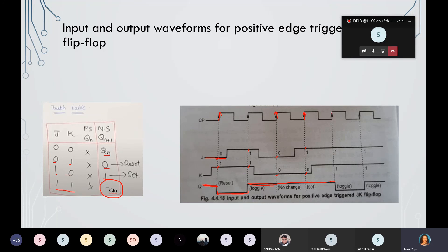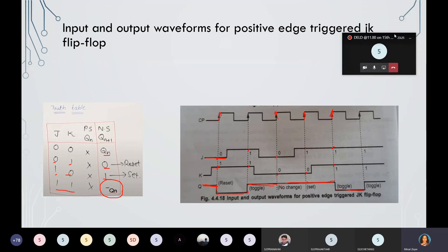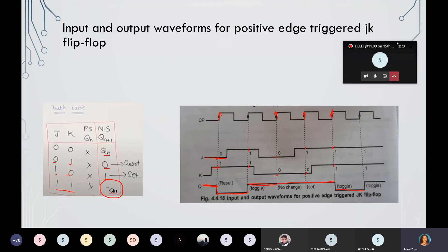For the next clock pulse at the positive edge triggered time, J and K are both 1 and 1 — so it is the toggling condition. Whatever the present state is, the next state is the toggle of that present state. Previously it was set, so now toggling means it is reset — the flip-flop is going to reset. This is the input and output waveform for JK flip-flop using positive edge trigger clock pulse.